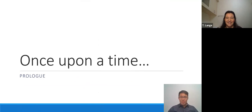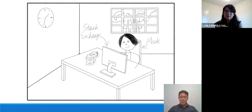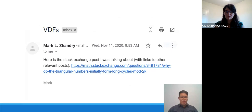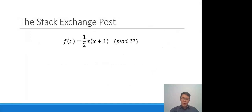Just as every good story begins with 'once upon a time,' Mark was back at home casually browsing the mathematics section of Stack Exchange when a specific post caught his interest. A few days later Mark talked to me about the post during our meeting and later sent me the link by email. The original post is on triangular numbers, namely f(x) = x(x+1)/2.